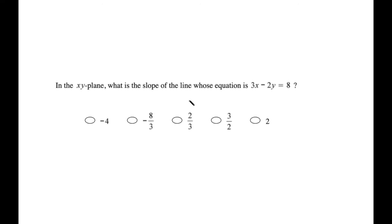In the x-y plane, what is the slope of the line whose equation is 3x minus 2y equals 8?